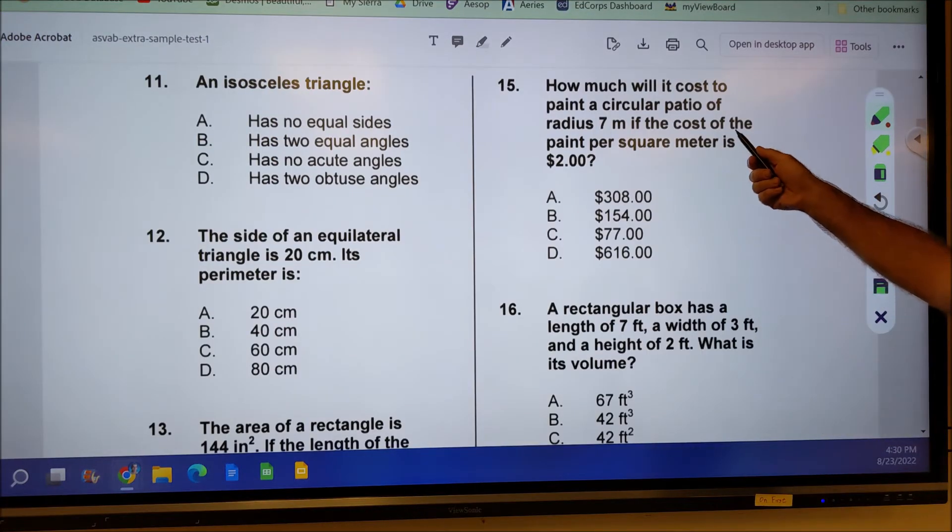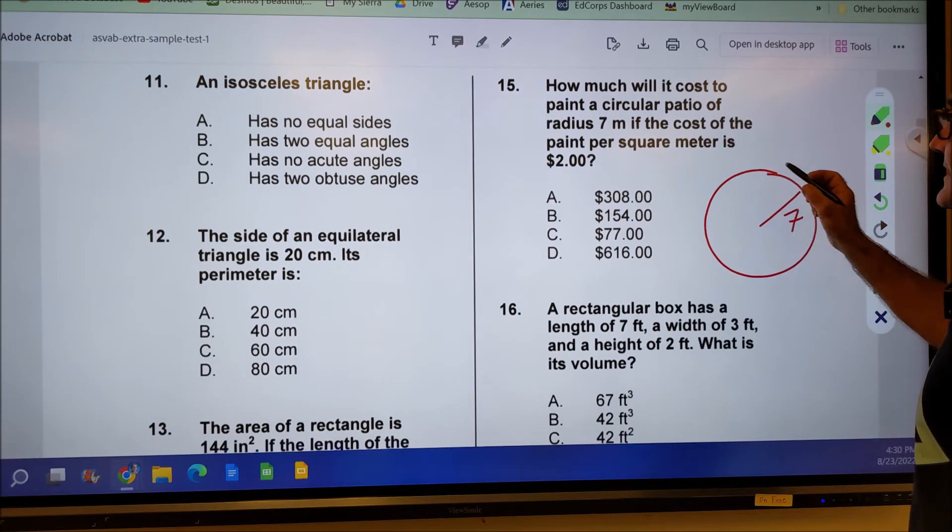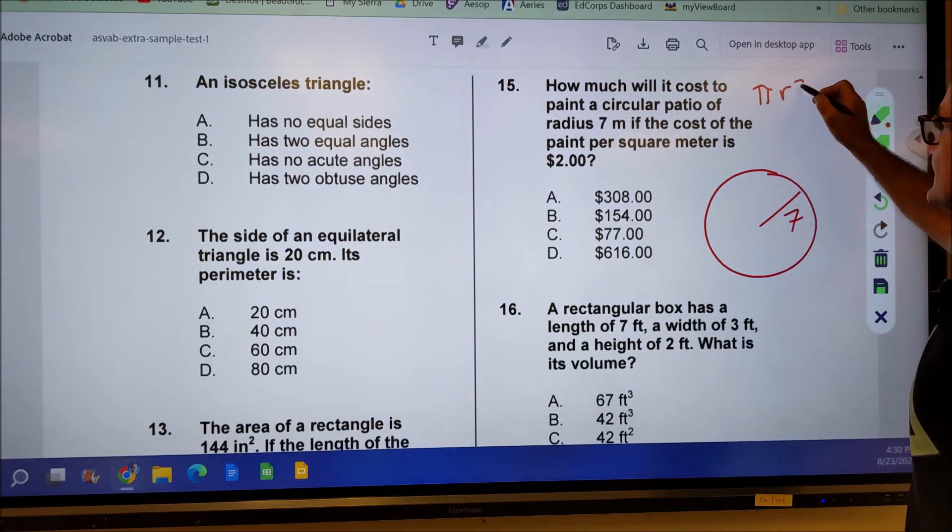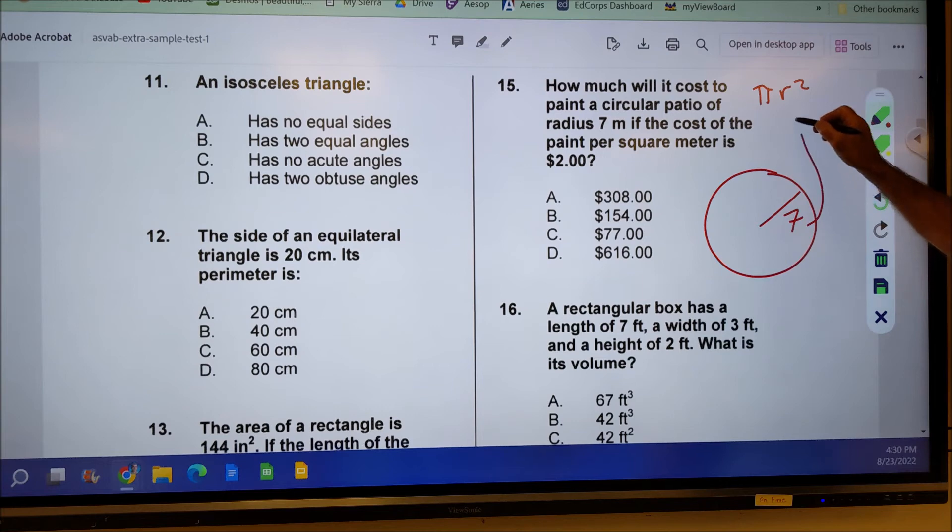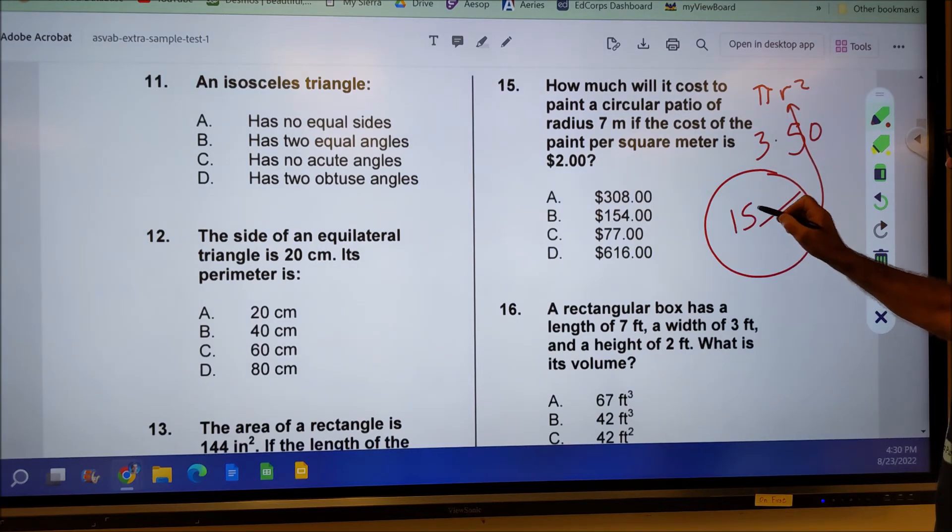Okay, number 15, how much will it cost to paint a circular patio with the radius of 7 meters if the cost of the paint is $2 per square meter? So I've got to figure out the total area of that circle because I'm going to paint it. Area is pi r squared. r is 7. I take that 7 and I plug it in there. 7 squared is 49. And then pi is about 3, 3.14. So I'm actually going to round that up a little bit. About 49, I'm going to round up to 50. 7 times 7 is 49. I'm going to round that up to 50. And I'm going to round that down to 3. So the area is approximately 3 times 50 or 150 square meters.